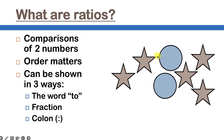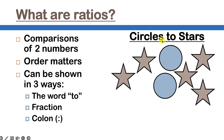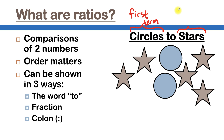Let's say we have all of these shapes, and I want to know the ratio of circles to stars. One important thing to remember is that the things you're talking about are called terms. This is our first term — the first thing we're talking about in a ratio. And this is our second term. Since we're talking about the ratio of circles to stars, we want to make sure that we talk about the number of circles first, and then the number of stars second.